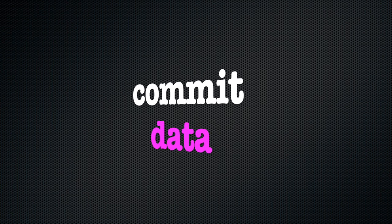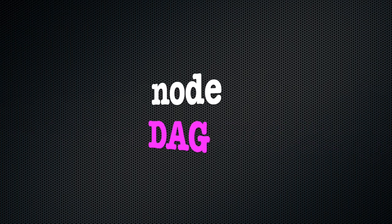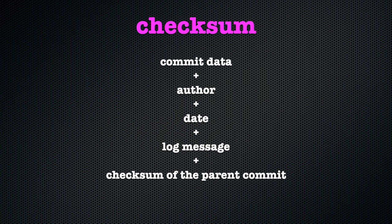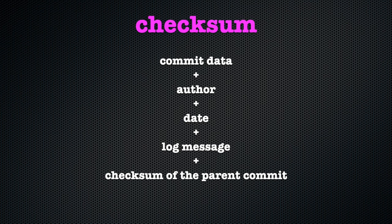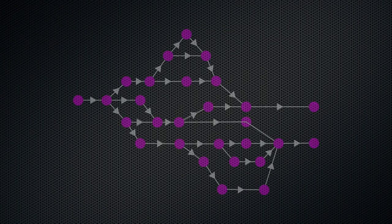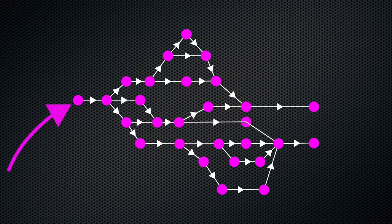So how does it work exactly? Well, each time we commit data to Git and create a commit object in the process, Git will make a checksum of the commit object, which will end up being a node in our graph. The following data is included in the commit object, which means it is used to calculate the checksum: the commit data itself, the author of the commit, the date of the commit, the log message that goes with the commit, and finally, the checksum of the previous commit. So with the exception of the very first commit — which is a bit like the source of our river and the only node in our graph that does not have a direct ancestor — each commit has a reference to the commit it is based on.